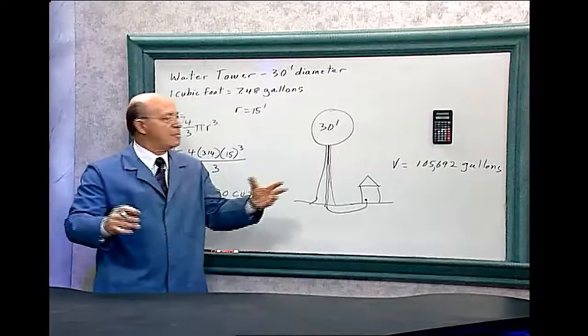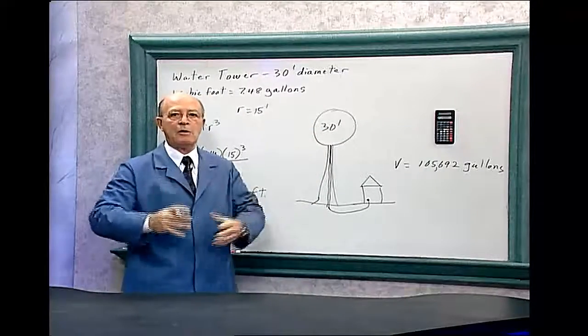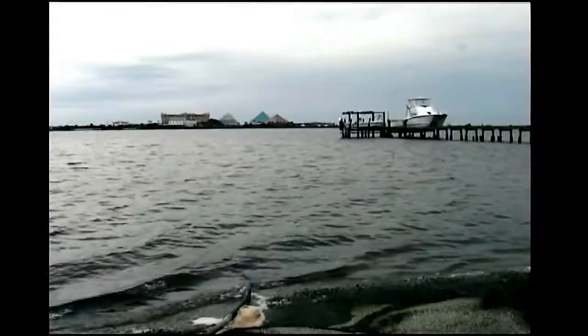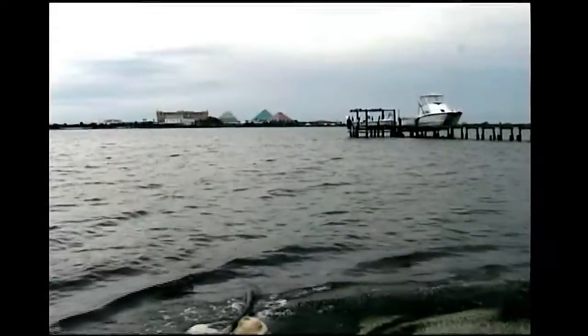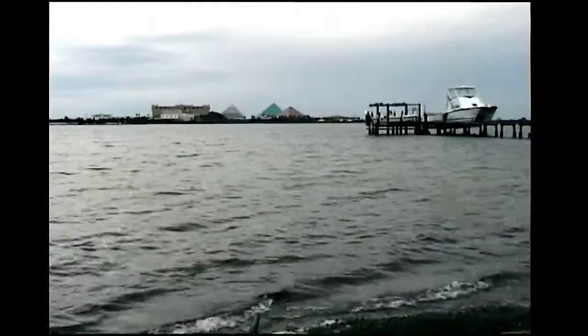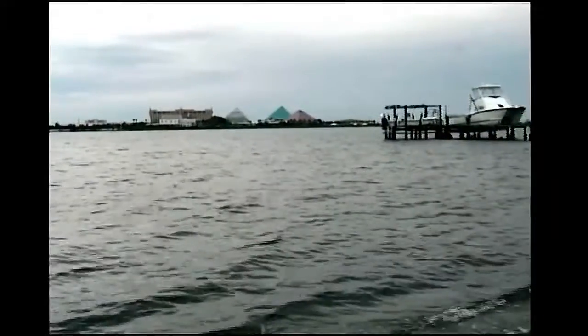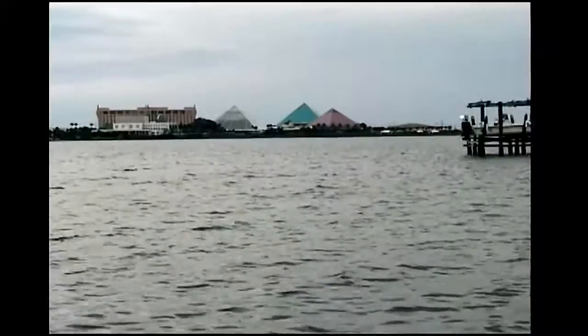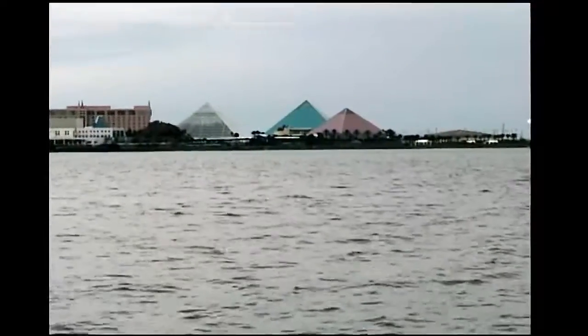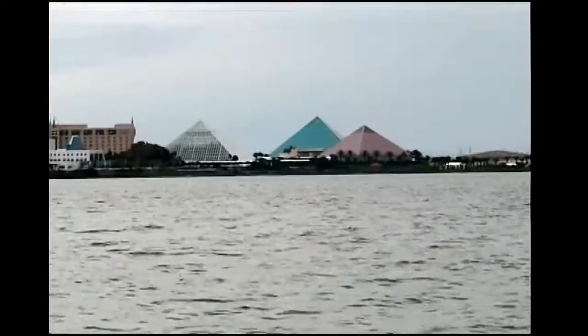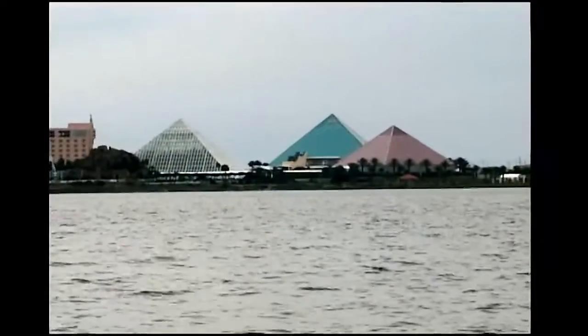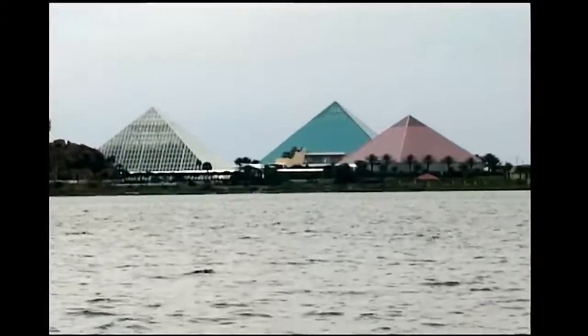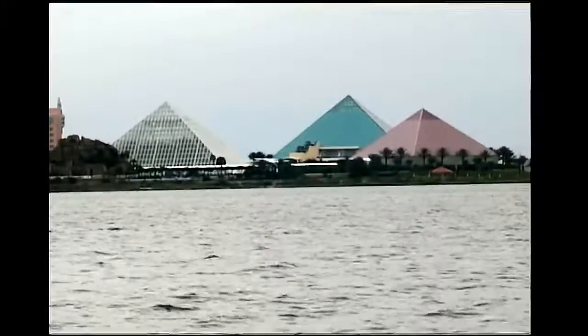This is Moody Gardens in Galveston, Texas. It has three pyramids: the Rainforest Pyramid, the Discovery Pyramid, and the Aquarium Pyramid. The Aquarium Pyramid is made up of steel, concrete, and glass. It is 128 feet tall, and the base is 220 feet by 322 feet. For air conditioning, one needs to know the volume of air in this building.